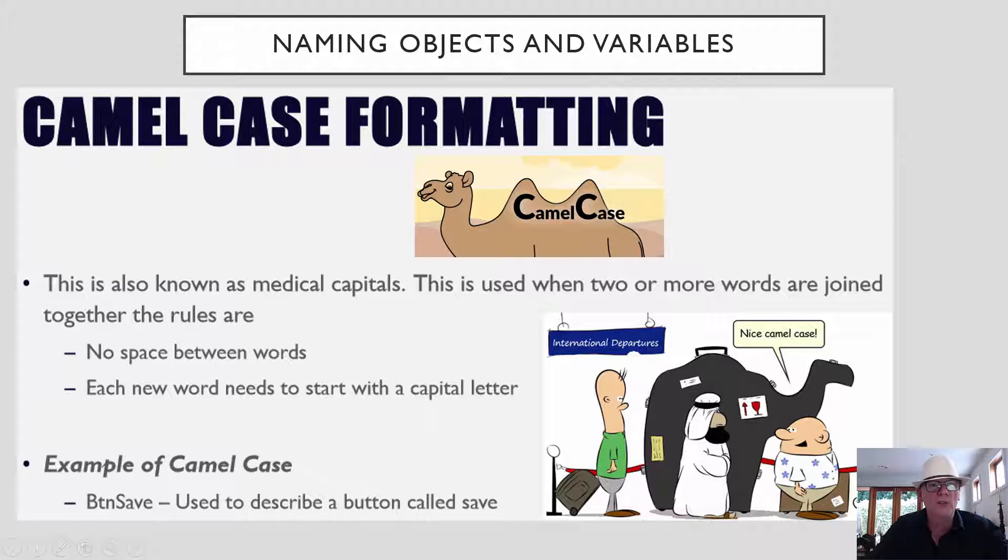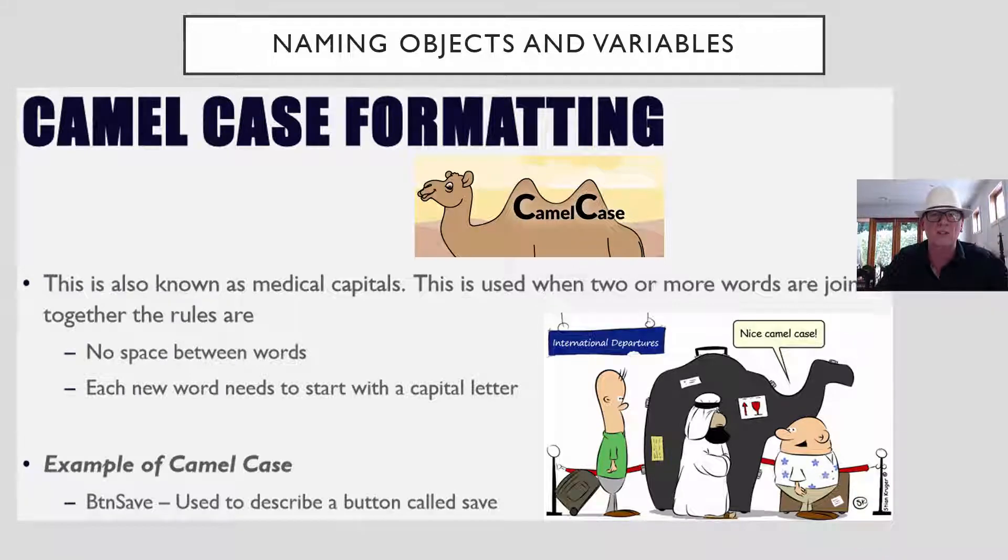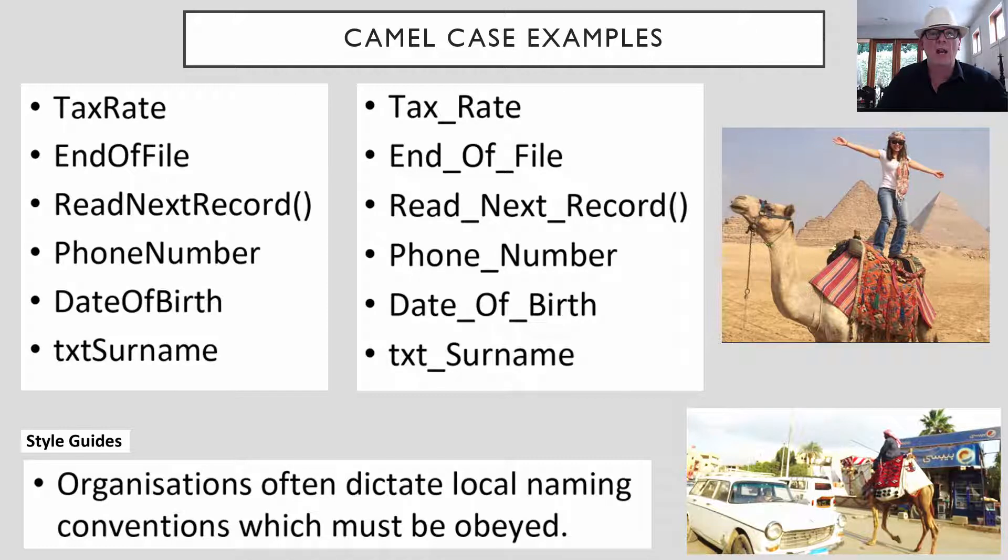For naming objects and variables, we use this camel case formatting, where we put the words without any spaces in between them when we're naming something, both our objects and our variables. Now the reason we don't use spaces is because if you've ever done HTML with spaces, you get these horrible percent 40 symbols to represent the space, and it's just not a good thing. So when we name things, like here's some examples, something like tax rate is tax rate, all one word, you don't put the space in between. So none of these have spaces in between.